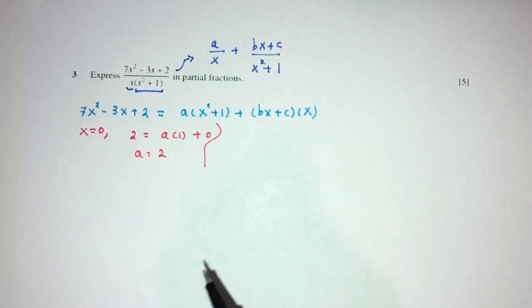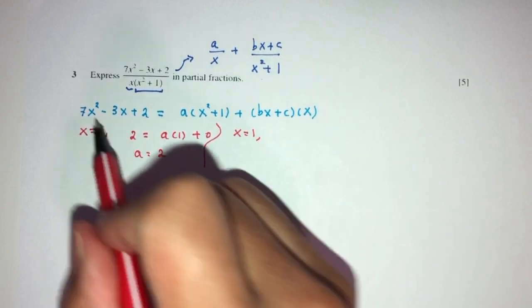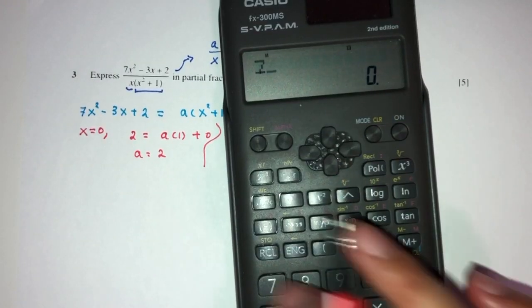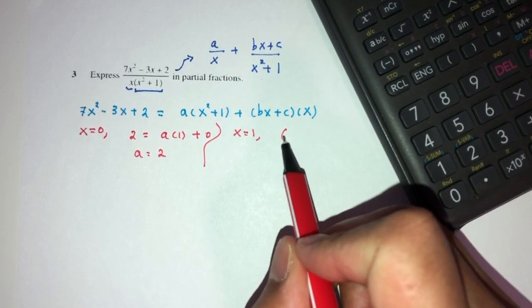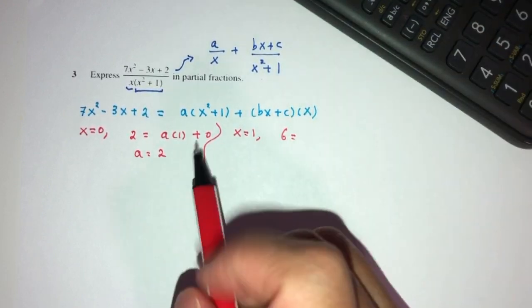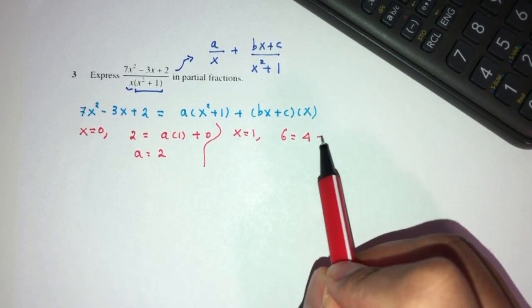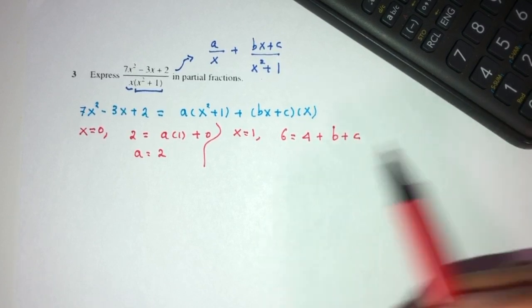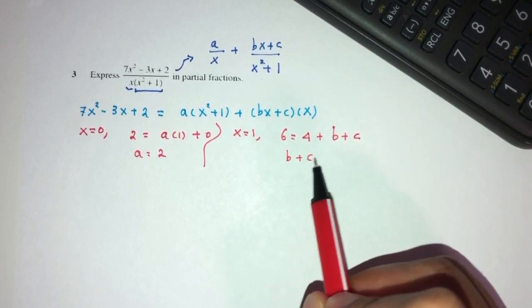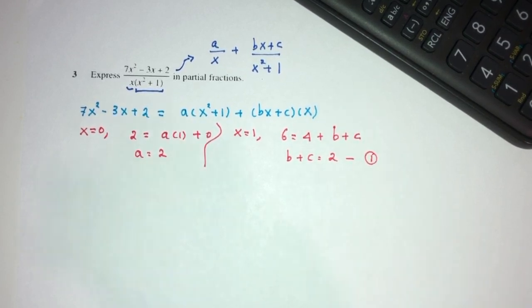Now, what's next? What can I choose next? Let me choose something easy as well. It's easy to work with 1. That will be 7 minus 3 plus 2. That will be 6. Is equal to... So, 1 plus 1 is 2. 2 times 2 is 4. Plus b plus c. So, b plus c is equal to the value of 2. This is my equation number 1.